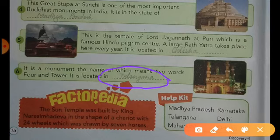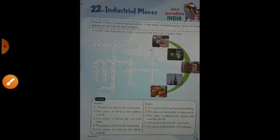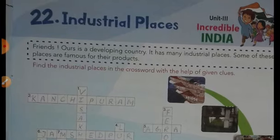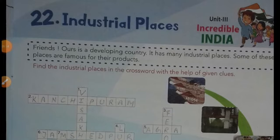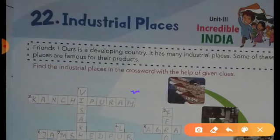Now come to the next page — Industrial Places. Dear students, our India is a developing country. It has many industrial places. Some of these places are famous for their products. Some states are famous for their products. Find the industrial place in the crossword with the help of the given clues.